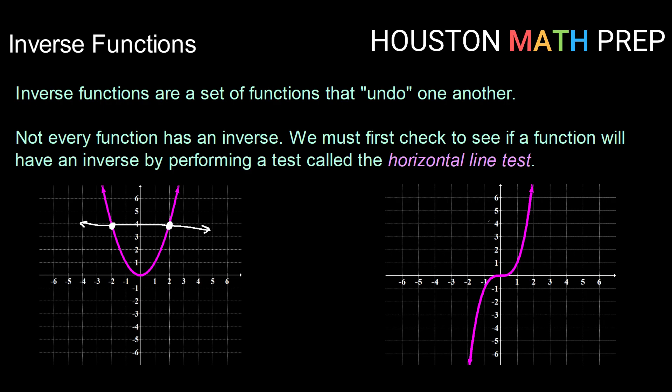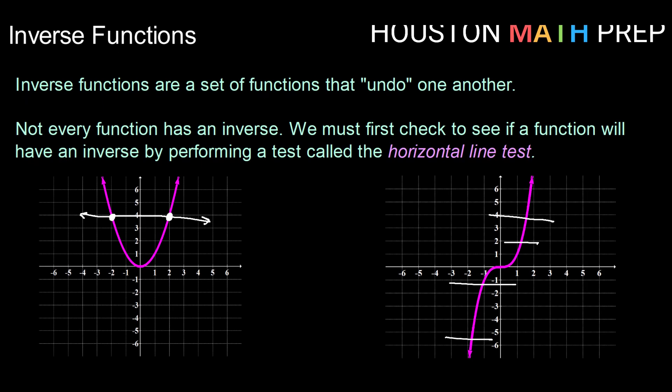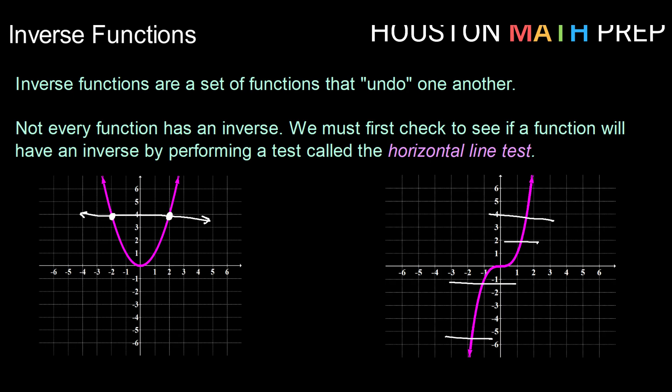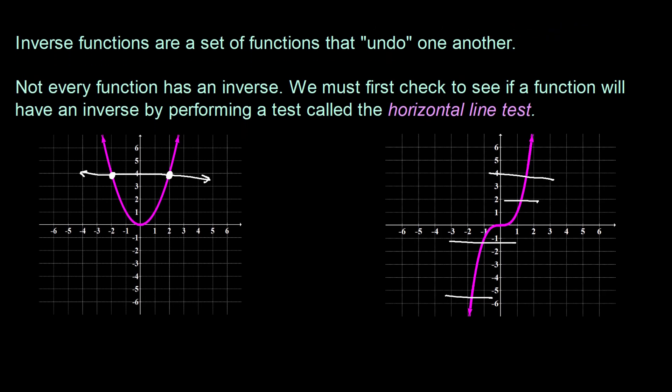If however you can draw as many horizontal lines as you want and they never touch more than one time then we can say that our graph passes the horizontal line test and our function will still have an inverse.